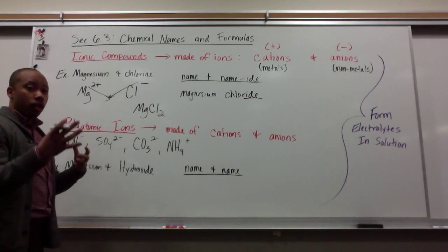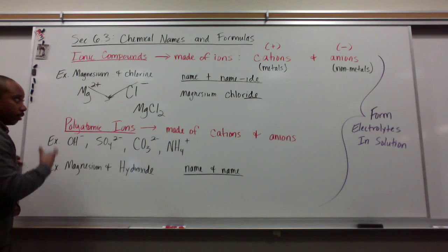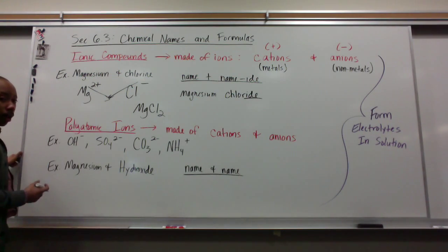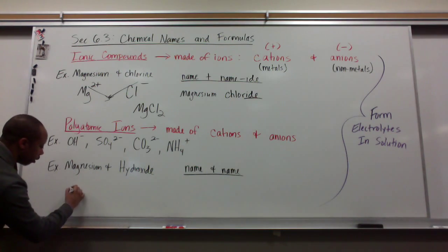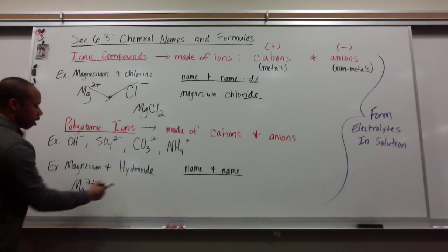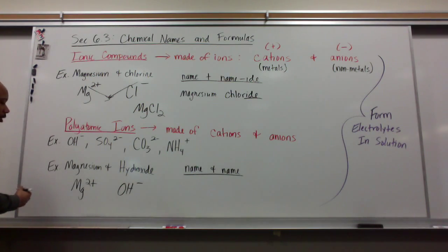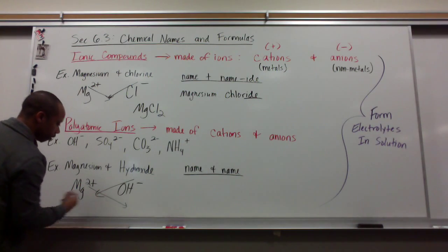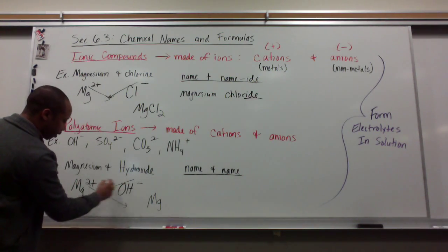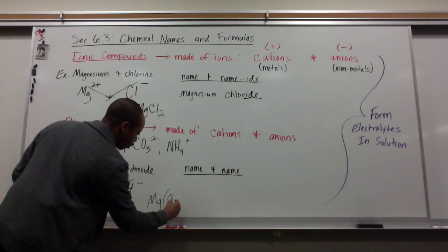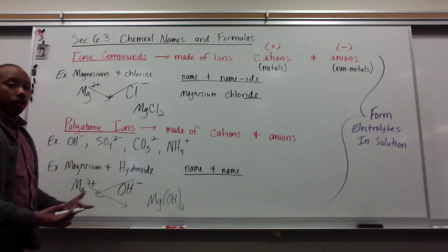Polyatomic ions are essentially covalently bonded atoms that have a charge. How does it look when the formula is being drawn? Very similar to ionic compounds with monatomic ions. Magnesium is still Mg2 plus. Hydroxide, we look at our polyatomic ion chart, we find hydroxide, and we write it as OH minus. We use the crossover method. Magnesium gets the one. Hydroxide gets two. So, it takes two hydroxide polyatomic ions to satisfy that one magnesium.